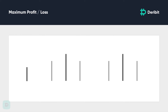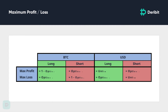The buyer's maximum loss is always limited to the option price paid. This also means that the seller's maximum profit is also limited to the option price collected. The maximum profit for the call buyer when measured in USD is theoretically unlimited, but when measured in BTC is capped at 1 BTC minus the option price. As the underlying Bitcoin price continues to rise, the amount of BTC required to pay each dollar owed decreases. Here you can see a comparison of the maximum profit and loss for the call option buyer (long) and call option seller (short), measured in both BTC and USD.